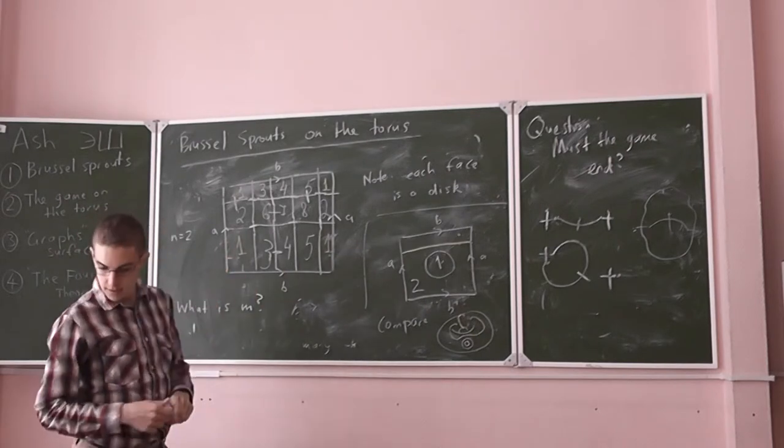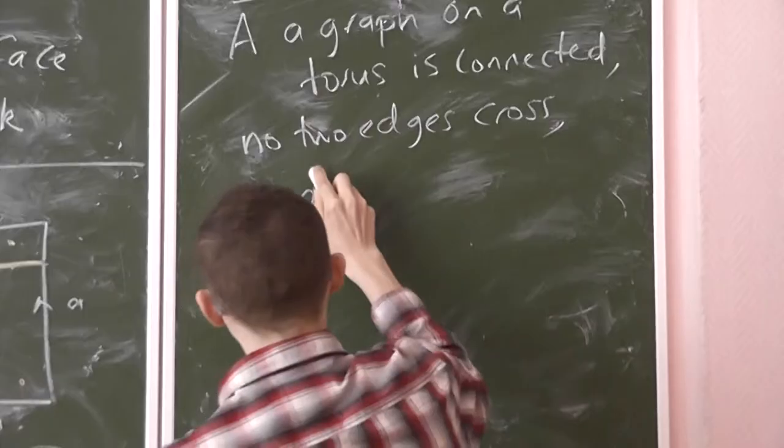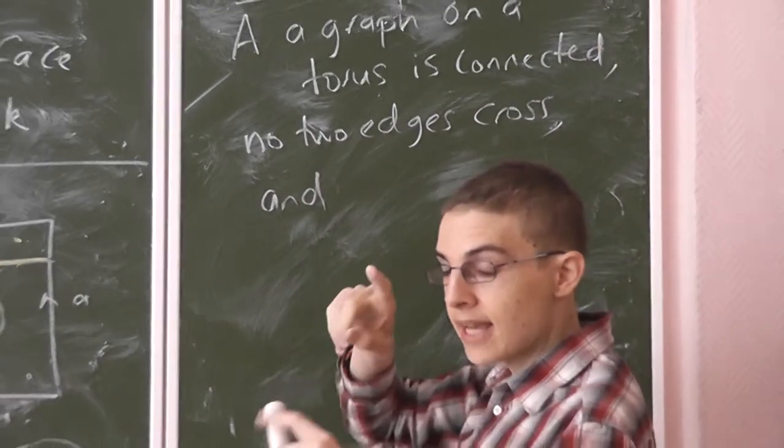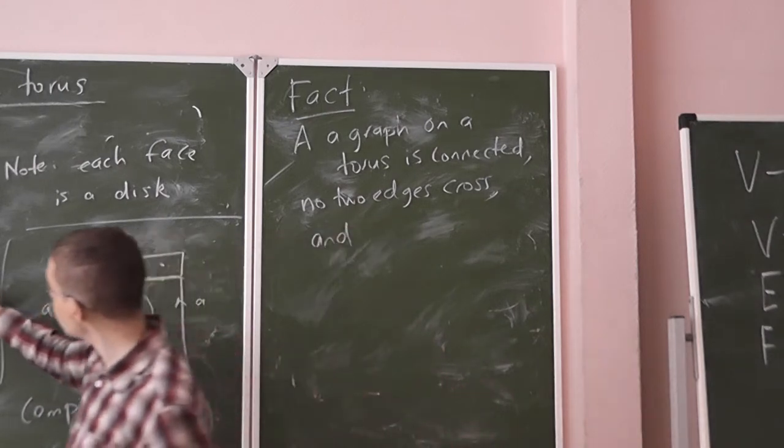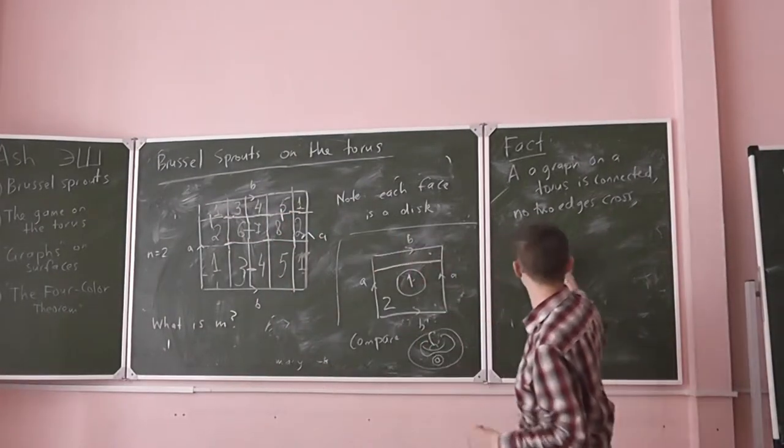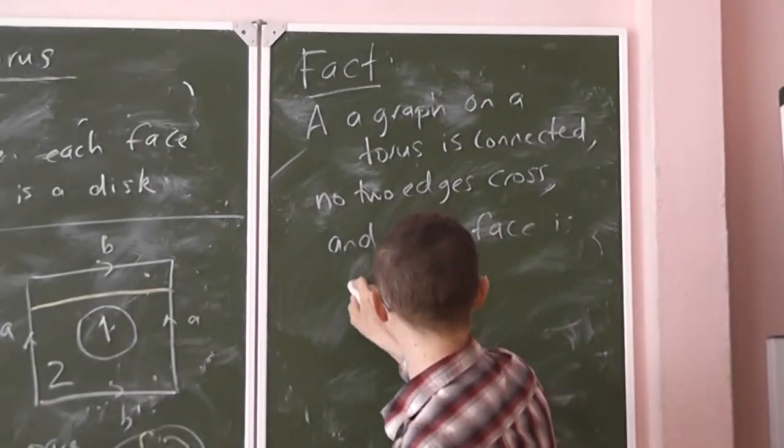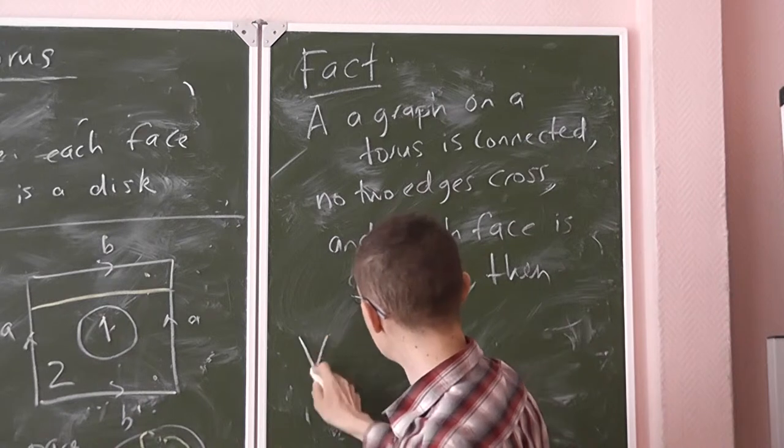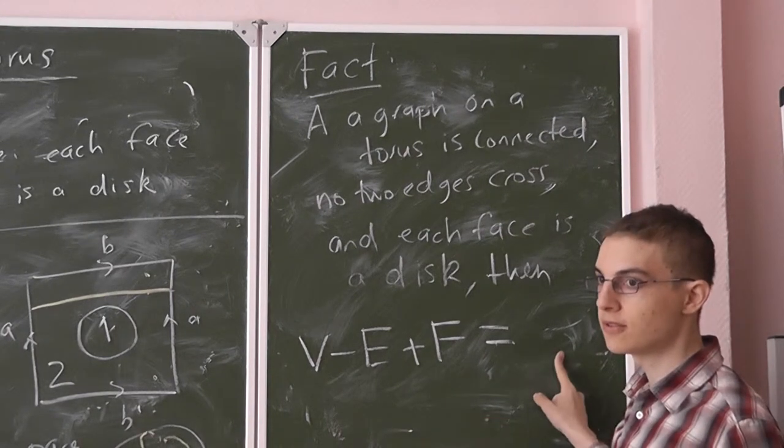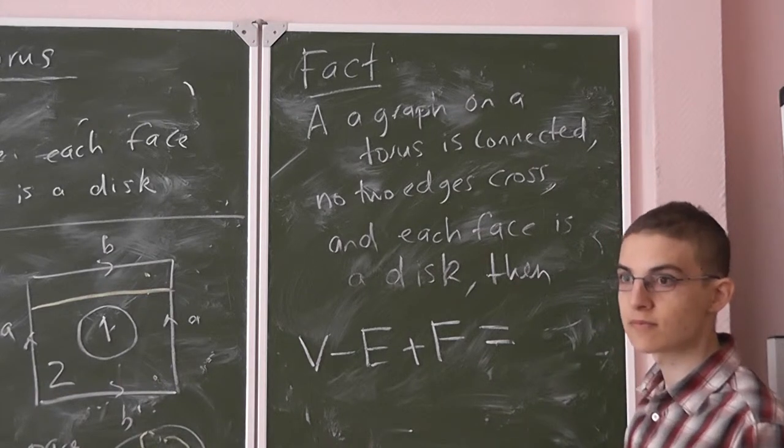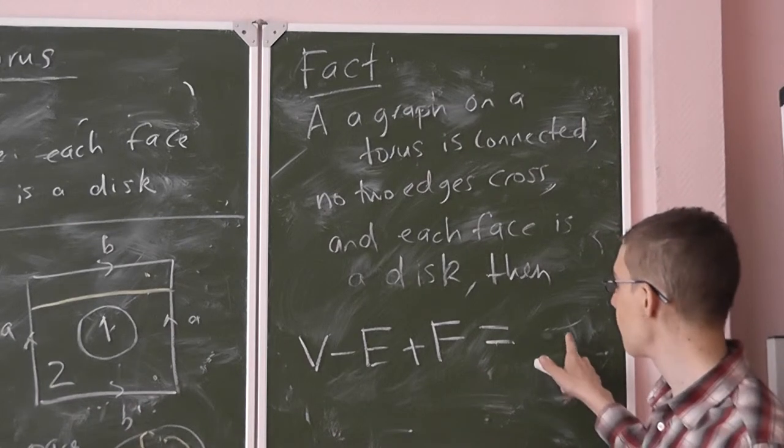Now, if we have a graph on a torus, connected with no two edges crossing except at vertices, and you have this property that each face is a disk, then we have our formula applying. Can anyone guess what this will be? In the case for sphere it was two. And what is the Euler characteristic of a sphere? Two. So for a torus, what might we guess this number be? Zero.